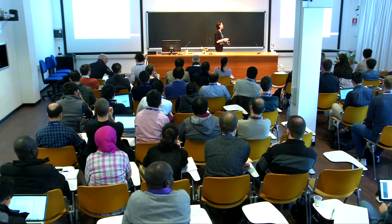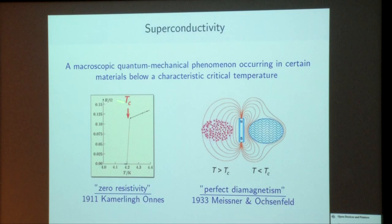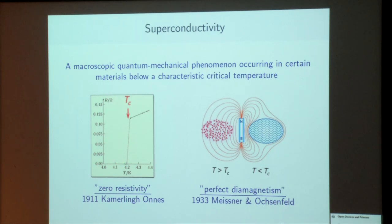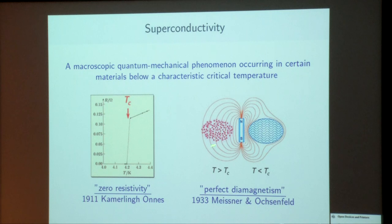Superconductivity is a quantum mechanical phenomenon occurring in certain materials below a characteristic critical temperature. At the macroscopic scale, there are two very intriguing manifestations. One is zero resistivity — below the critical temperature, the electric current can flow without any resistance. This was discovered in 1911 by Onnes. Basically, the magnetic field is expelled from a superconducting state. This was discovered in 1933 by Meissner and Ochsenfeld. Since superconductors can carry very high current densities and generate very high magnetic fields, they can find numerous applications.